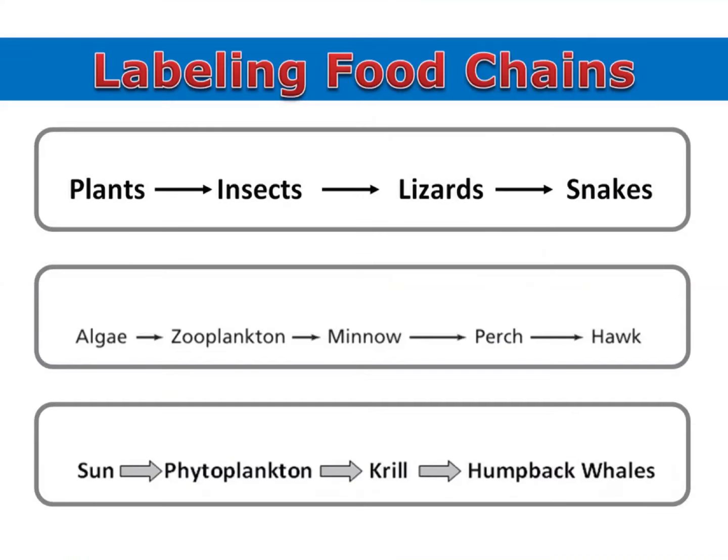Being able to label food chains and food webs is a very important skill. To label this first food chain, we'll start by placing a P over our producer.